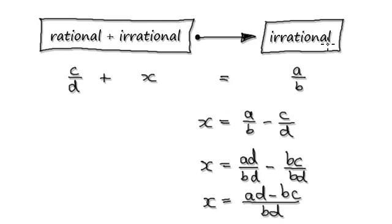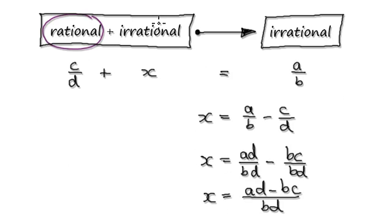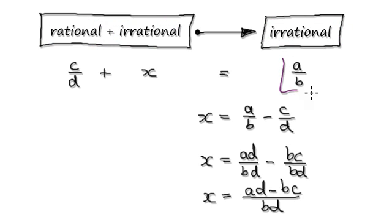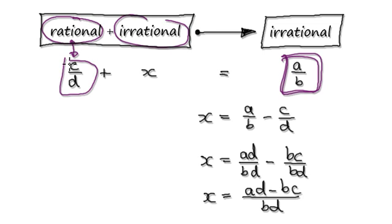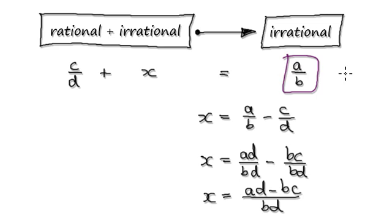We are trying to prove that a rational number plus an irrational number leads to an irrational number. The idea behind proof by contradiction is that you assume the opposite — you assume the answer will be a rational number, that it can be expressed as a fraction. So let's say the rational number is c over d, and you add an irrational number x. We assume the answer can be expressed as a over b.